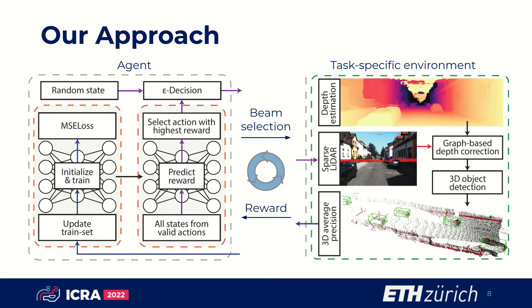Over time, the agent learns to specifically explore those beam selections with a predicted high performance. To balance exploration versus exploitation, we embed the agent into an epsilon-greedy decision setup.